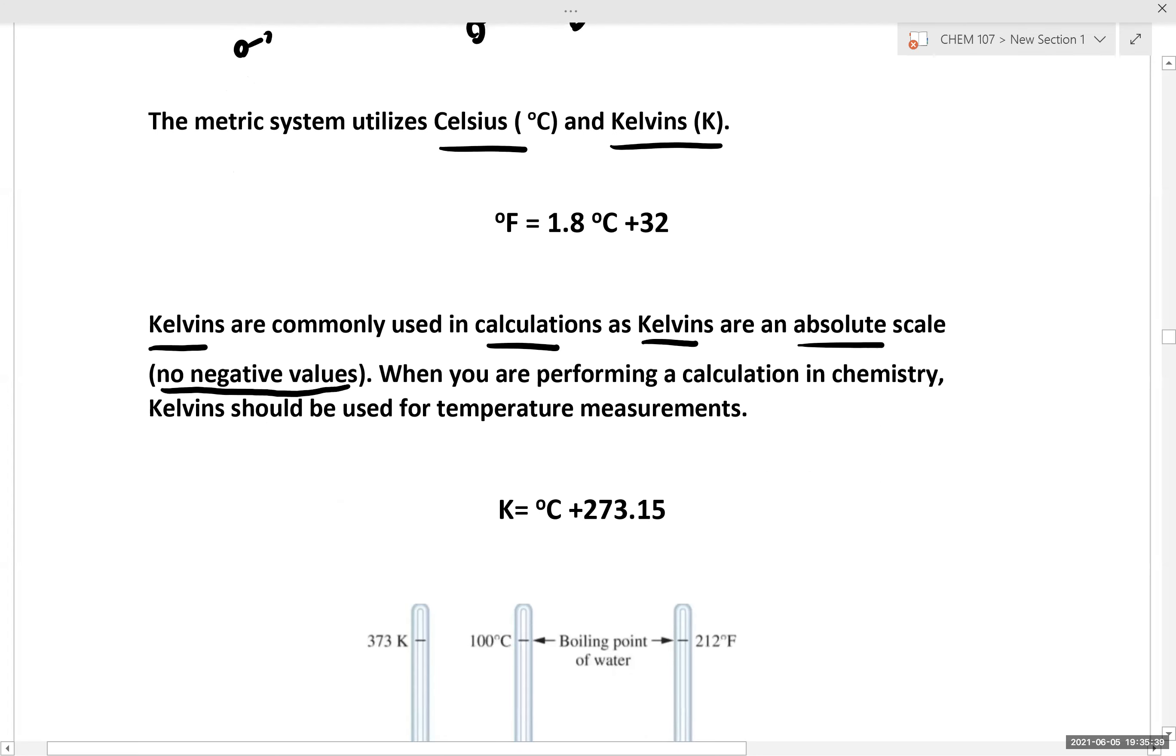To convert between Celsius and Kelvins, you simply take the temperature in degrees Celsius and add 273.15.